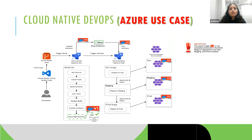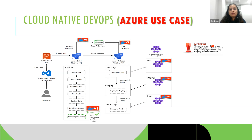Moving to the next use case — cloud native DevOps using Azure. This is another pipeline we implemented using only Azure services: Azure DevOps, Azure Key Vault, Azure File Store, and AKS clusters. Whenever a developer is ready, they push code to Azure Repos, which are Git-based. This triggers the build pipeline in Azure DevOps, which goes through the usual stages: get source, install tools, build solution, run tests, make a Docker build, and publish artifacts.